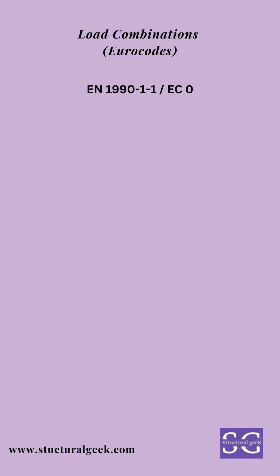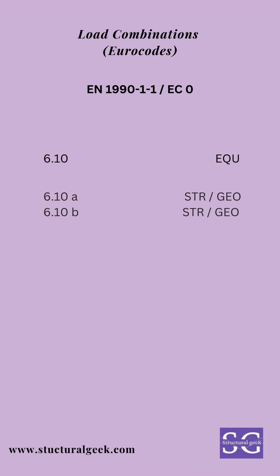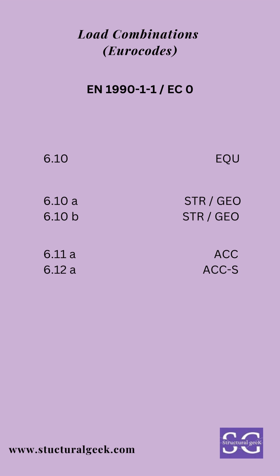Load combinations are very well stated in EC0 or EN1990. The very first in the list is EQ610, which is the equilibrium combination and is the most critical in regard to the stability of the building. Next is 610a and 610b, which are used to design the members, connections, and foundations. The next combination is 611a, which covers the accidental case, and similarly for seismic actions you have 612a.